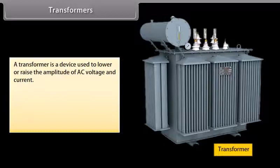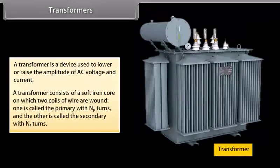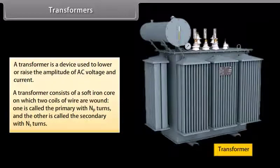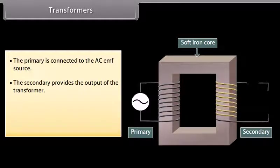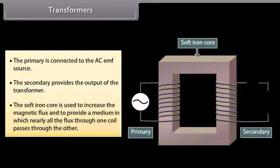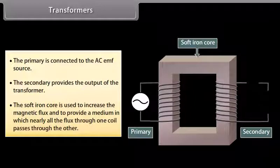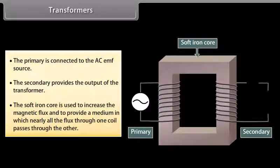Transformers: A transformer is a device used to lower or raise the amplitude of AC voltage and current. It consists of a soft iron core on which two coils are wound — the primary with NP turns and the secondary with NS turns. The primary is connected to the AC EMF source and the secondary provides the output. The soft iron core increases magnetic flux and ensures nearly all flux through one coil passes through the other.